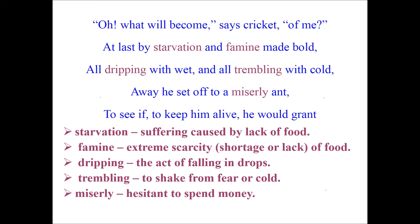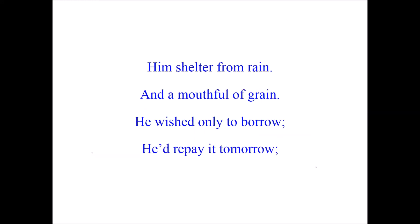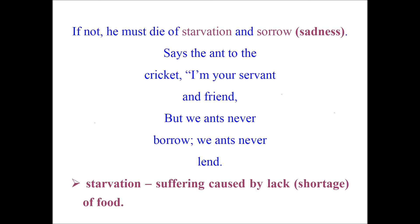He hoped the ant might help him survive. He requested shelter from rain and a mouthful of grain — he wished only to borrow and would repay it tomorrow. In this stanza, the cricket requested the ant to provide him some food and shelter so that he could save himself from the rain. He also made it clear to the ant that he would repay the grains. If not, he must die of starvation and sorrow. Says the ant to the cricket: I am your servant and friend, but we ants never borrow, we ants never lend.